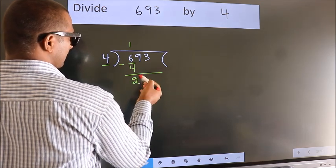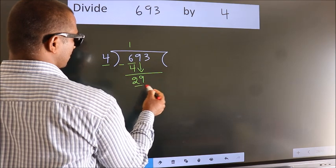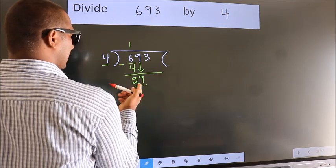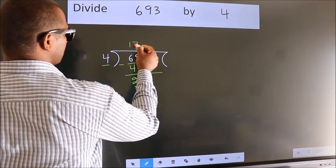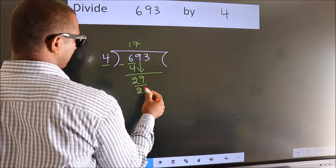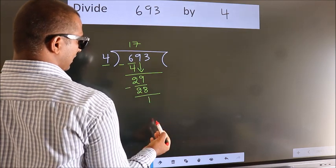After this, bring down the beside number. So 9 down, making 29. A number close to 29 in the 4 table is 4 7s 28. Now we subtract. We get 1.